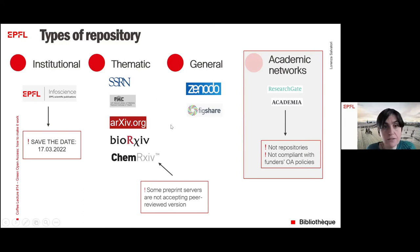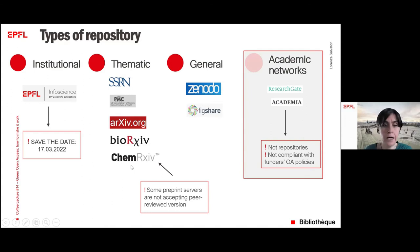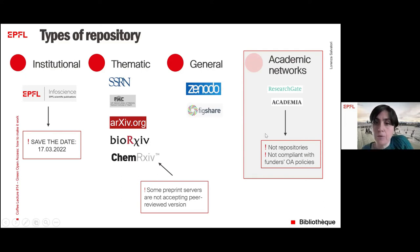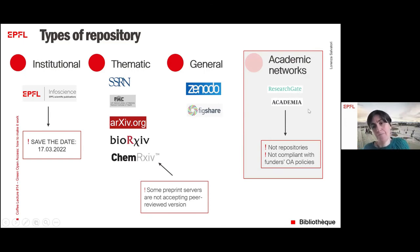Then there are thematic repositories, mainly preprint servers — you may know PMC or arXiv. Just be careful, because for some of them, like ChemRxiv, you are not allowed to upload a peer-reviewed version of your article. There are also general purpose repositories, like Zenodo and Figshare. I would also like to mention academic networks — it's quite common for researchers to upload their articles to these websites. It can be fine, but just be careful: they are not repositories and they are not compliant with funders' open access policies.